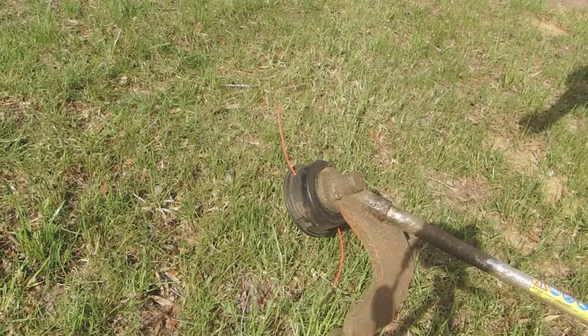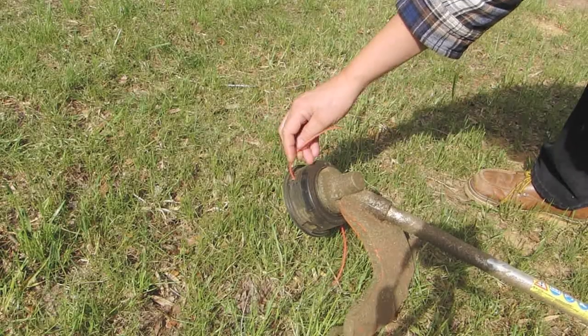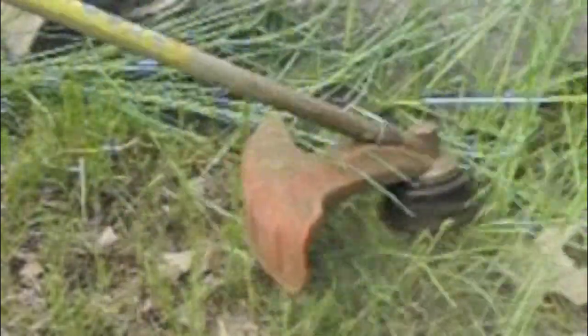Now we can see the same results if we looked at a grass string trimmer. When it rests the string is limp and flexible, but once we put it into motion it becomes rigid and can cut through very thick grass, just like the paper did through the wood.